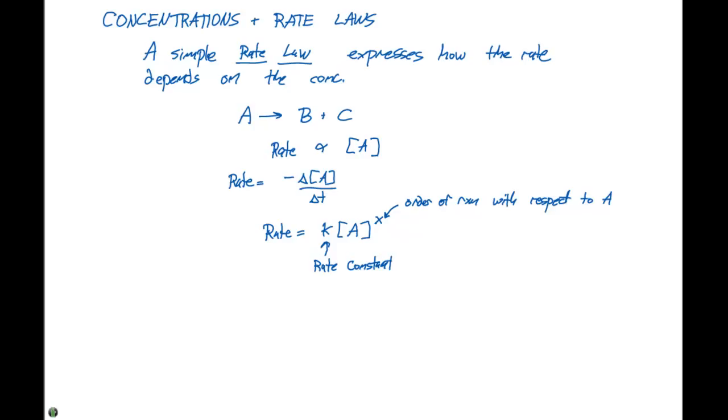So for example, if we had a particular reaction where I took nitrogen gas and added three moles of hydrogen gas, we could produce two moles of ammonia. And this is a very important industrial reaction to produce ammonia.